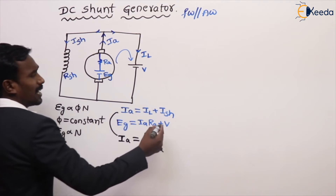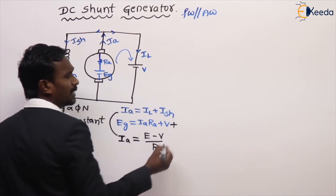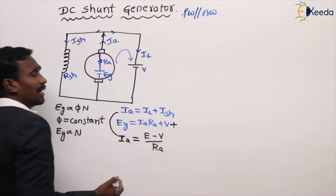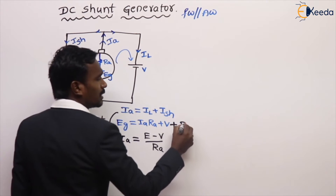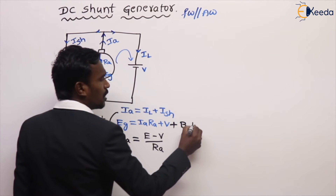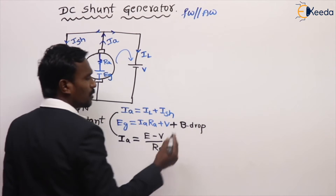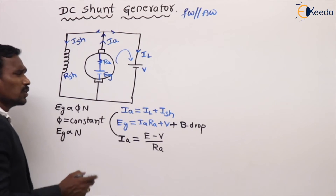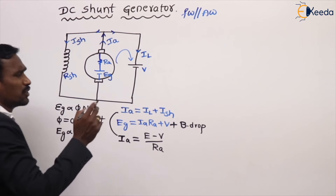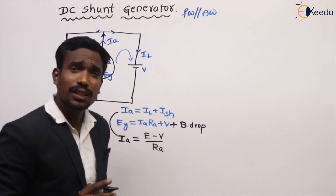Actually, this is not the exact equation. There is another drop also — that is the brush drop. A small drop is there. So we have the current equation, voltage equation, and we also account for brush drop.